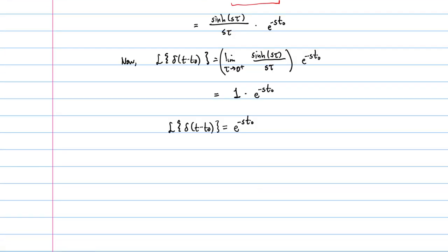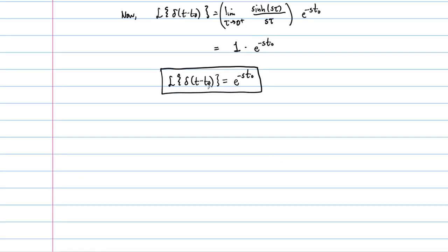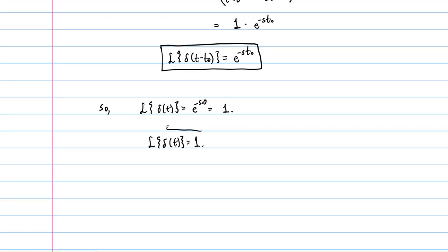So the Laplace transform of the delta function for any constant t naught is e to the minus s times t naught. In particular, the Laplace transform of just delta of t — not shifted — is e to the minus s times zero, which is just one. So: the Laplace transform of the impulse function is one, and the Laplace transform of a shifted impulse is e to the minus s times t naught, where t naught is the location of that impulse.